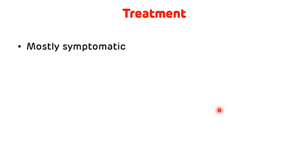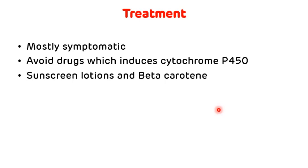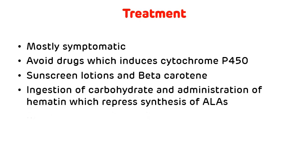Treatment of porphyria is mainly symptomatic, along with withdrawal of precipitating factors. You must avoid drugs that induce cytochrome P450, like barbiturates. For patients with photosensitivity, use sunscreen lotions along with beta-carotene, which reduces free radicals and protects against photosensitivity. Ingestion of carbohydrates and administration of hematin will repress the synthesis of ALA synthase and delta-aminolevulinic acid synthase, helping relieve signs and symptoms.